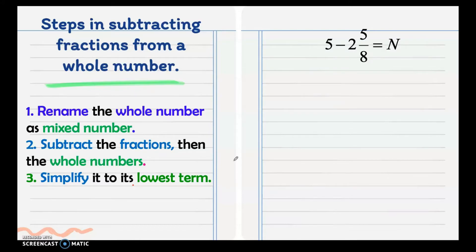Next is subtracting fractions from a whole number. First we rename the whole number as a mixed number. We have 5 and we rename it by writing 4 and 8/8. 4 and 8/8 equals 5. Why did I write 8 over 8? So that I can subtract right away since the denominator here is 8. Subtract 2 and 5/8.